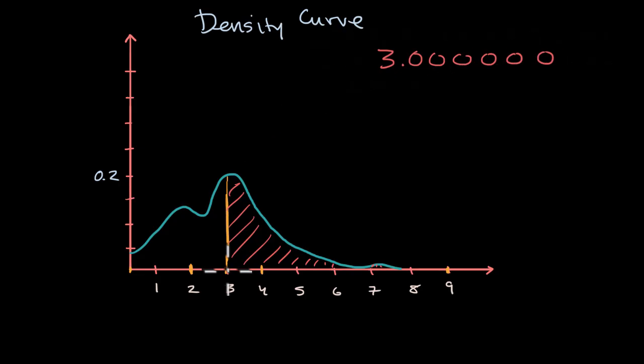Well, you might be tempted to just say, okay, this is three. Let me see the corresponding point on the curve. It looks like it is about 0.2 or a little higher than that. So maybe you would say a little bit more than 20% or approximately 20%. And what I would say to you is this is wrong.